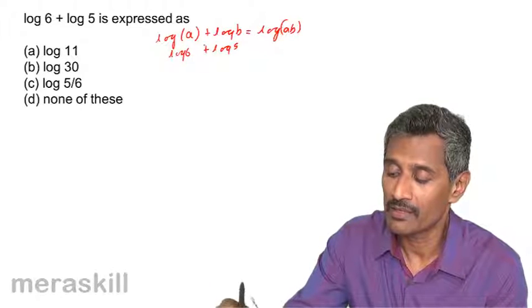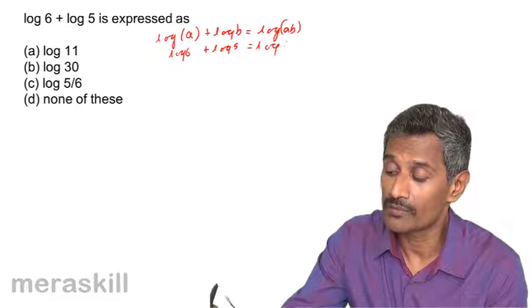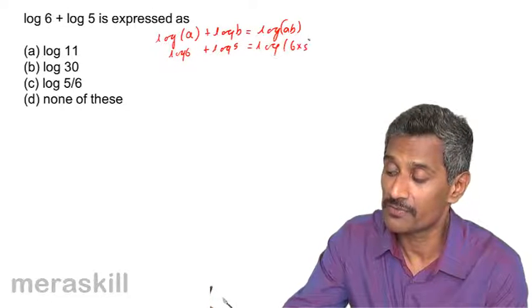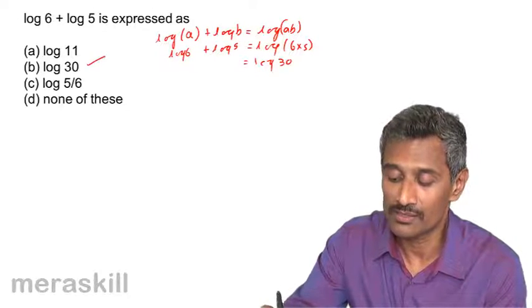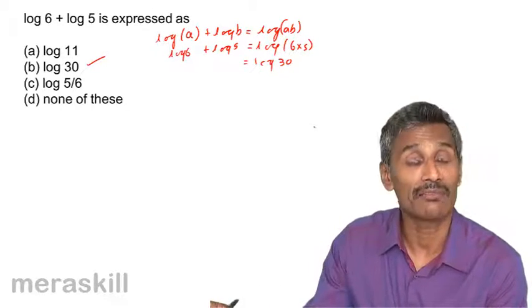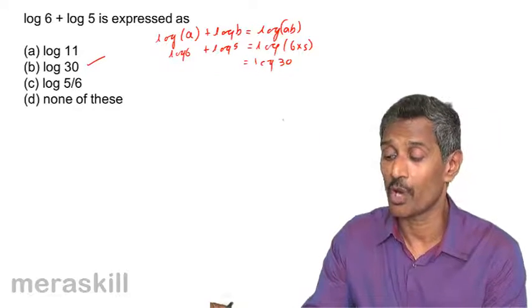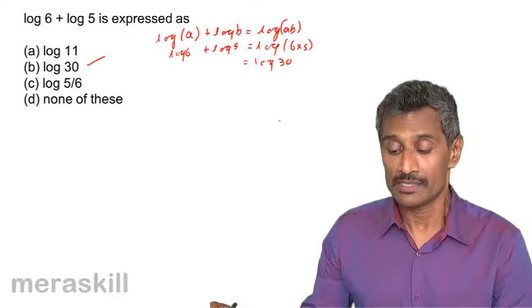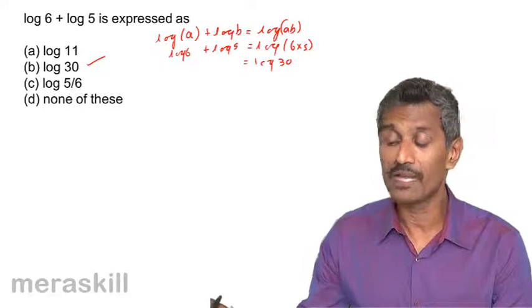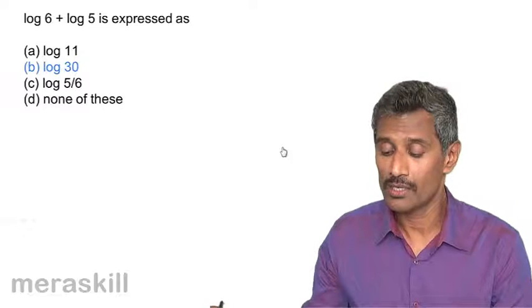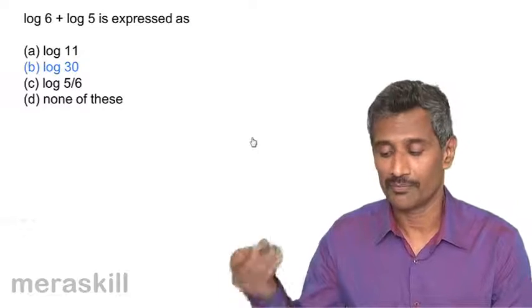So log 6 plus log 5 is nothing but log of 6 into 5, that is log 30. That's the result.